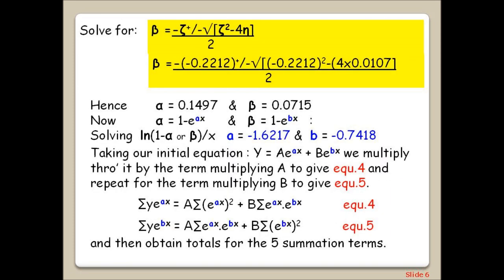Having determined zeta and eta, we can now feed it into the quadratic roots equation to obtain alpha and beta. And using the identities linking alpha and beta to small a and small b, we can determine the numerical values of small a and small b.